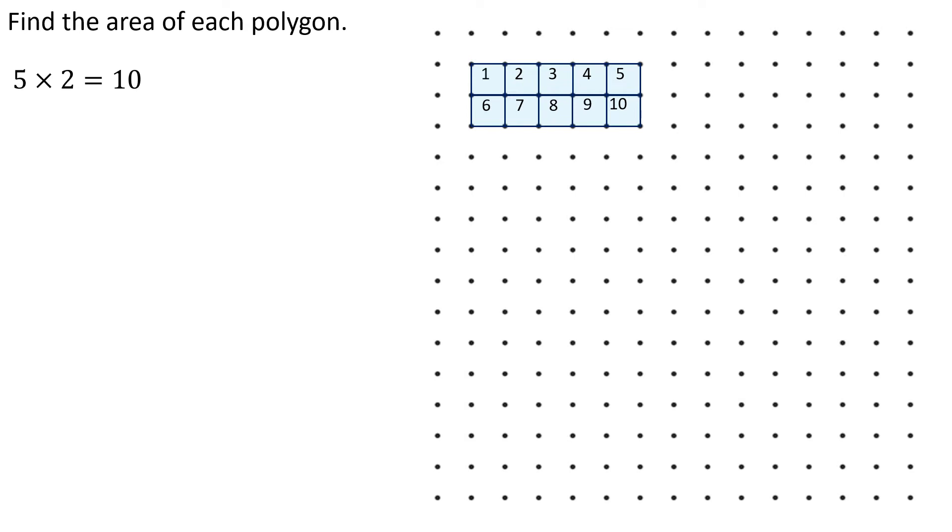Now notice it says polygon and not just a rectangle. Find each polygon, because sometimes you get some unusual shapes. And if you get an unusual shape, it's like, well, what do I want to do? Well, again, I could cut it up in little one by one squares and say, aha, look, it's got an area of 10.